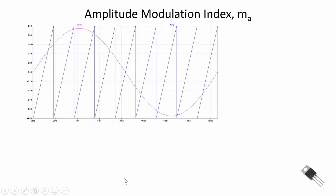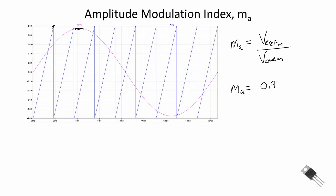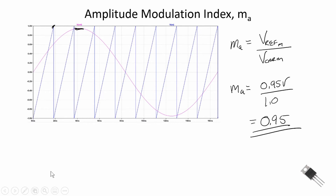That equals nine, and you'll see that we have nine sawtooth waveforms within one reference cycle. The other index is called the amplitude modulation index. M sub a is equal to our reference maximum value divided by our carrier maximum value. Here our carrier maximum value is one and our reference maximum value is about 0.95, so for this example M sub a equals 0.95 divided by 1, giving an amplitude modulation index of 0.95.